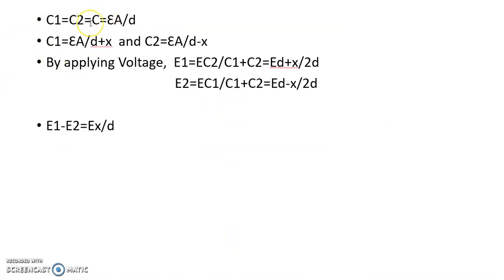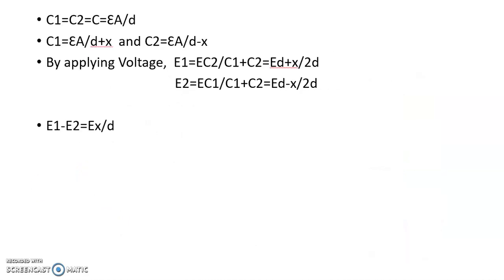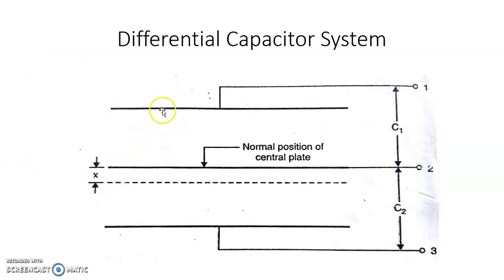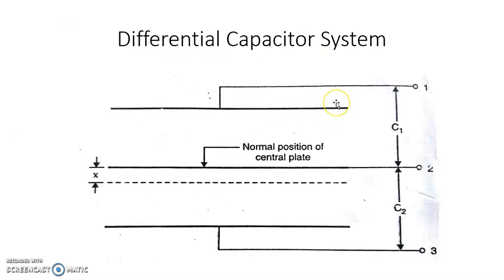Both capacitances are equal. When the central plate is displaced parallel to itself through a distance x, the capacitances of the two capacitors change: C1 becomes epsilon A divided by (d plus x), because the distance between the upper two plates increases by x. Similarly, C2 becomes epsilon A divided by (d minus x).